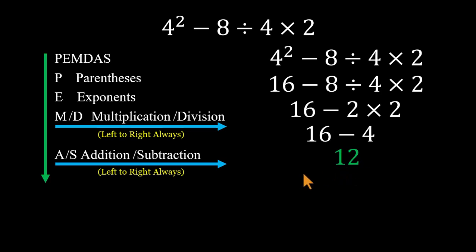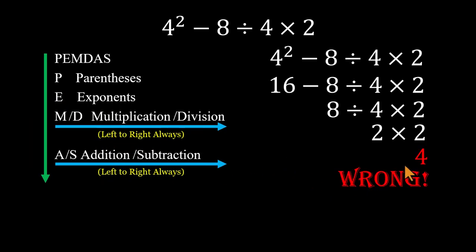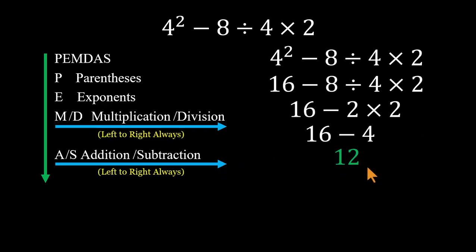So quick recap. If you take PEMDAS too literally, you'll get 15. If you just go left to right, you'll get 4. But if you follow both rules together, you'll always land on the right answer. 12.